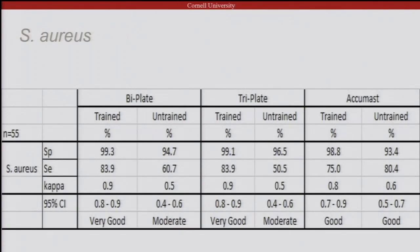For Staph aureus, we have high specificity for all readers. On bi-plate and tri-plate, trained personnel had higher sensitivity for identifying Staph aureus compared to untrained personnel. Bi-plate had a very good kappa outcome for trained and moderate for untrained readers. Tri-plate showed very good kappa for trained and moderate for untrained. For Acumast, untrained personnel had higher sensitivity for identifying Staph aureus, and kappa results were good for both trained and untrained readers.